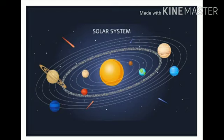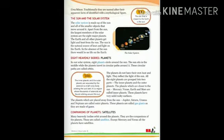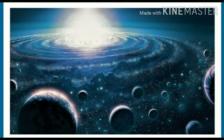These circular paths are called orbits. The planets do not have their own heat and light. They reflect the light of the sun and all the eight planets are grouped into two parts. Inner planets means which are closer to the sun. These are Mercury, Venus, Earth, Mars.